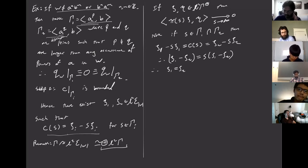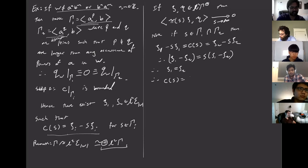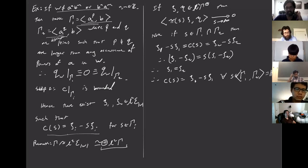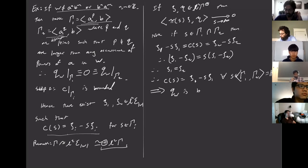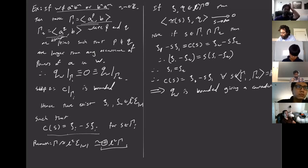If s is in the intersection of Γ₁ and Γ₂, then c(s) equals ξ₁ − s·ξ₁ but also ξ₂ − s·ξ₂. Rearranging, ξ₁ − ξ₂ is fixed by every s in the intersection. But the representation is mixing and this intersection group is infinite, so if it's fixed it must be the zero vector. Therefore ξ₁ equals ξ₂, which means c is inner on both subgroups with the same vector, so c is inner on the group they generate — which is all of F₂. This implies c is bounded, and since q is a bounded distance away, q_w is bounded — a contradiction.